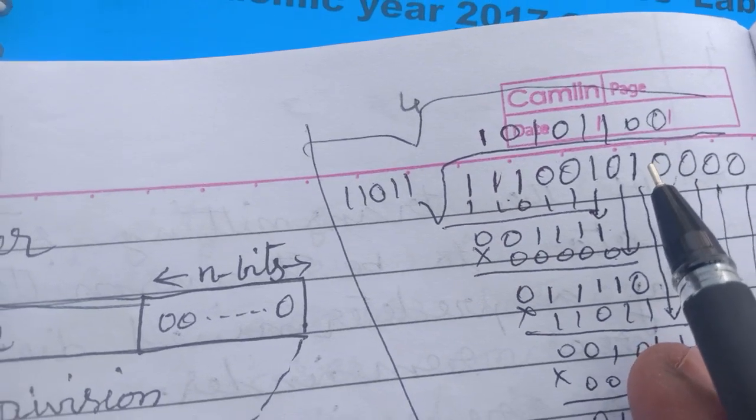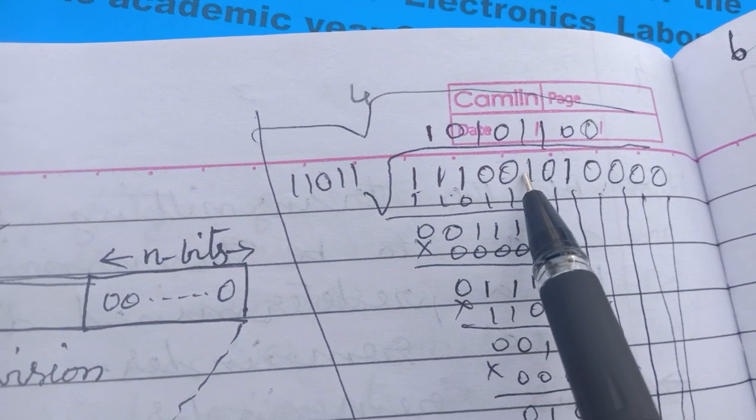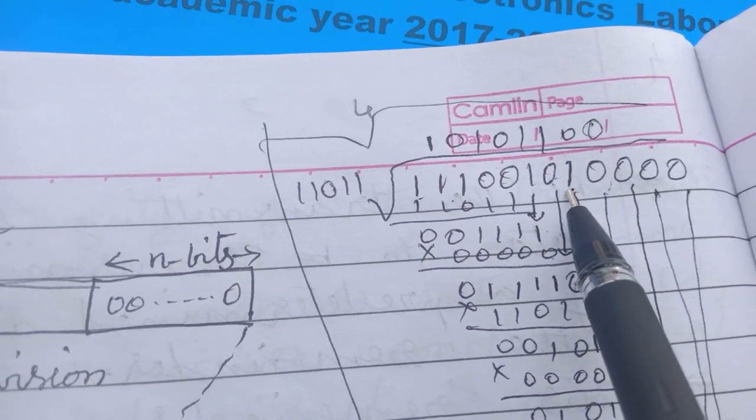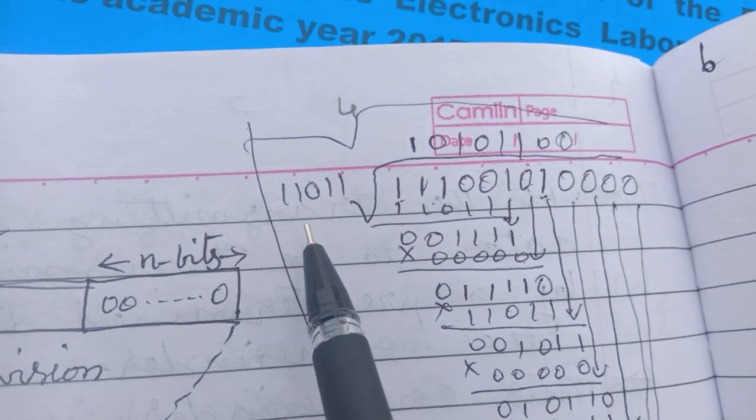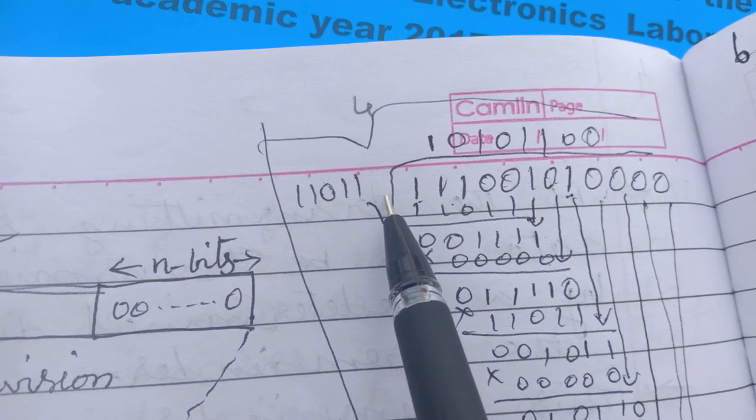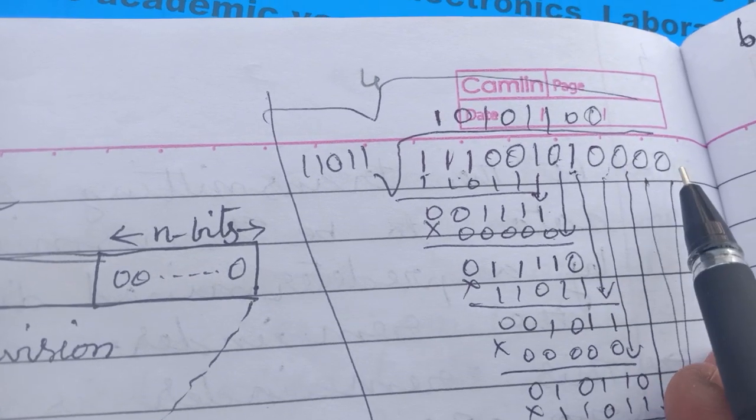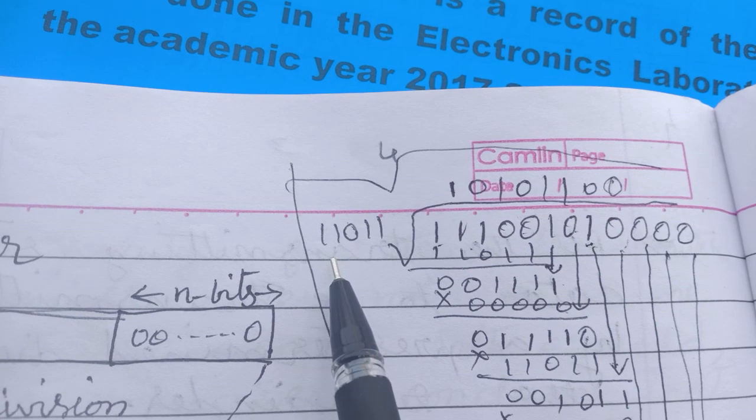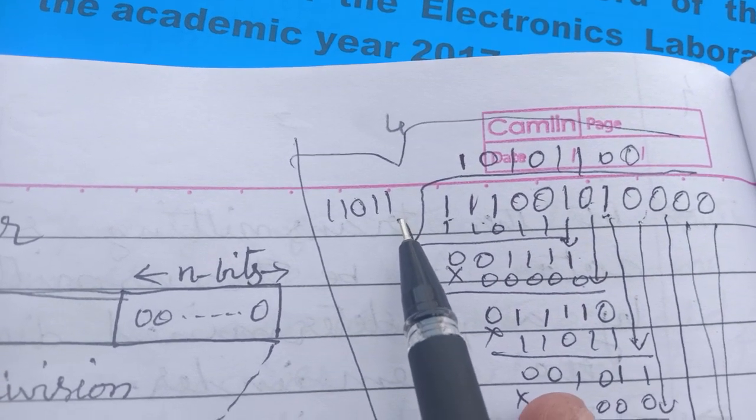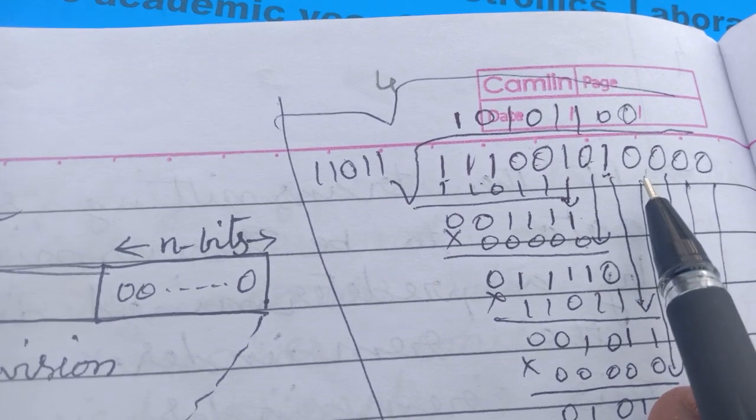Here, the data to be transmitted is 1100101. We are dividing this data with the polynomial 110011 to get the cyclic redundancy code. We are appending four zeros. The CRC code must always be one bit less than the polynomial with which we are dividing the data to be transmitted.